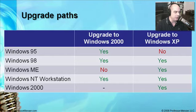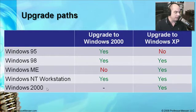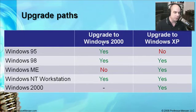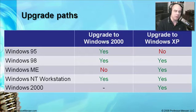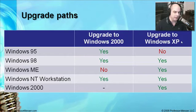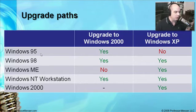Here's a chart showing upgrade paths. If you are running Windows 95, 98, Windows Millennium Edition (Windows Me), Windows NT Workstation, or Windows 2000 Professional, you can upgrade to Windows 2000 Professional from almost everything except Windows Millennium Edition — that was a decision Microsoft made that they weren't going to support a direct upgrade into Windows 2000 Professional.